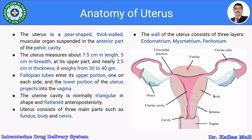The uterus measures about 7.5 cm in length and 5 cm in breadth at its upper part, and nearly 2.5 cm in thickness, with a weight of approximately 30 to 40 grams. The fallopian tubes enter its upper portion, one on each side. The lower portion of the uterus projects into the vagina. The uterine cavity is normally triangular in shape and flattened anteroposteriorly.